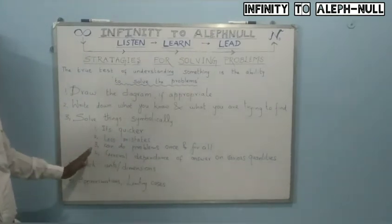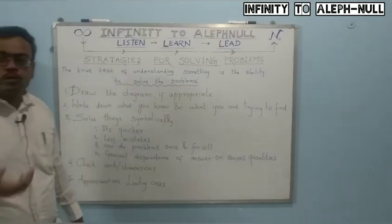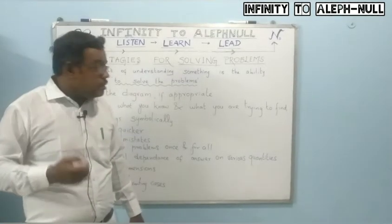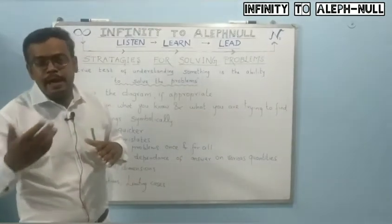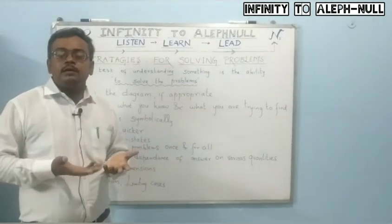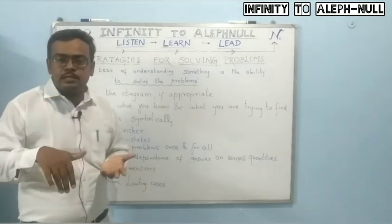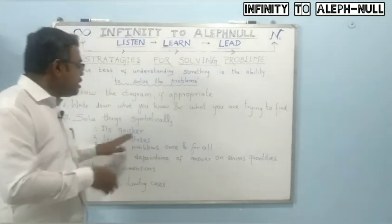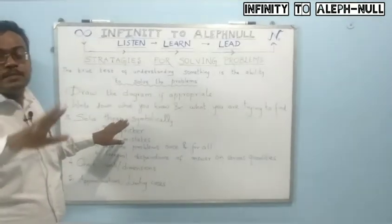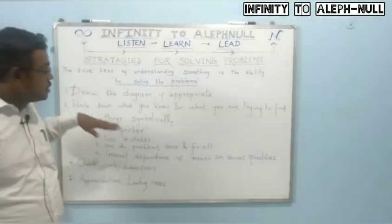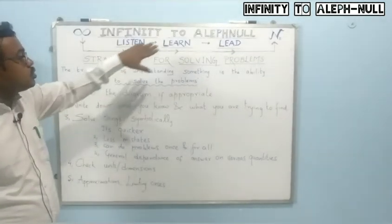The fourth advantage is that you can find the general dependence of the answer on various quantities. If the answer depends on quantities a and b, for example, you can determine what happens to the answer when a is increased or decreased. This dependence can be identified if and only if the problem is treated symbolically — this is one of the most important things in physics while solving problems.